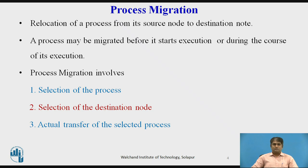For an already existing process, process migration involves three major steps: selection of the process to be migrated, selection of the destination node to which the selected process should be migrated, and actual transfer of the selected process to the destination node.